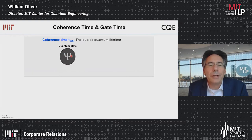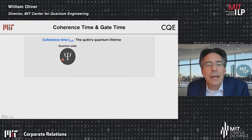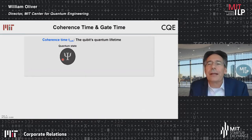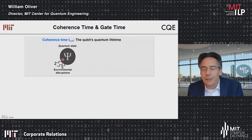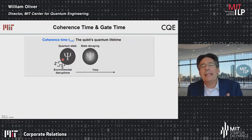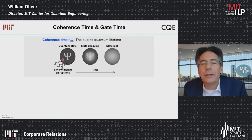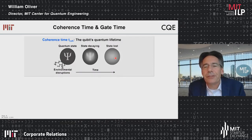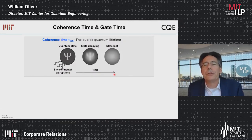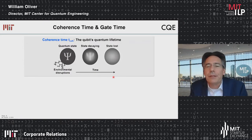Over time, the quantum state decays and eventually blurs and is completely lost. The qubit is still there, but the problem is the state it's in after some time period is unknown to the algorithm designer. This lifetime due to environmental disruption is called the coherence time.